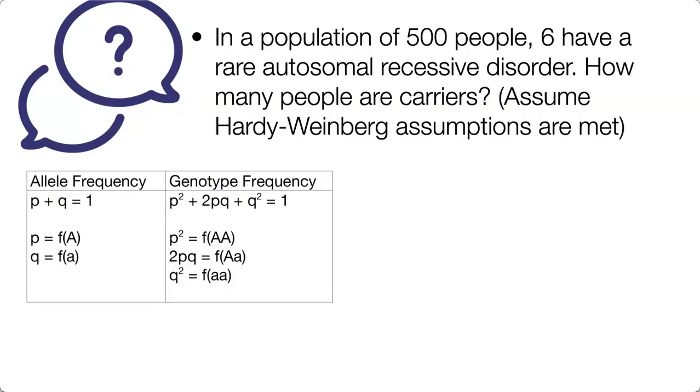When you approach this question, first identify what they give you. They give you q squared. 6 out of 500 is q squared, and they are asking you to find how many people are carriers.